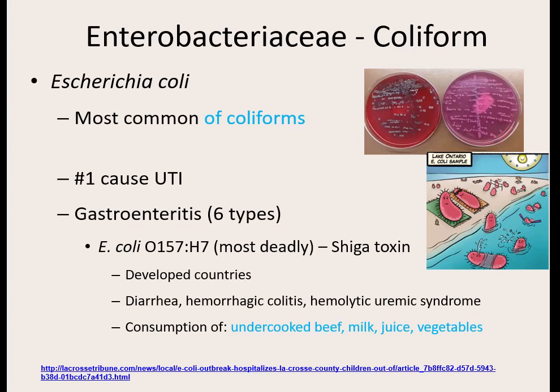E. coli is the genus and species, but there's more than one strain. Just like you're all homo sapiens but not genetically identical, E. coli has different strains that make them genetically different from each other. There are six types of strains of E. coli that can cause gastroenteritis. E. coli gets a lot of recalls — usually meat products. Everyone thinks E. coli is bad, but it's not; it's in your digestive tract doing good things. If something is recalled because of E. coli, it's because it is genetically one of those strains that can cause disease.